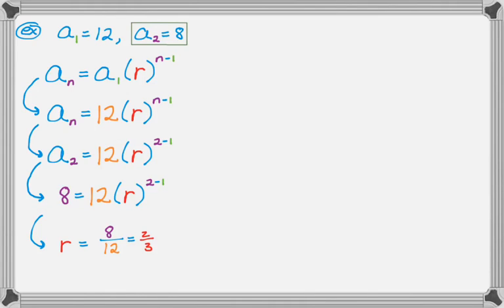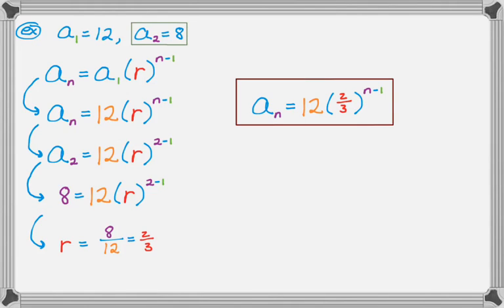So I know the first term and I know the common ratio. And what I can do then is just go back to the second line there, where it's a sub n is 12r to the n minus 1. I'm going to replace r with 2 thirds, because that's what I figured out it equals. So I get 12 times 2 thirds to the n minus 1. And that's my formula. It's really not that bad. You do have to remember what the general formula looks like, but if you can remember that, then you can pretty much solve the problem without any issues.